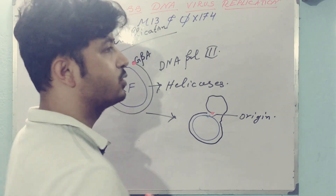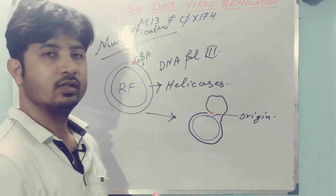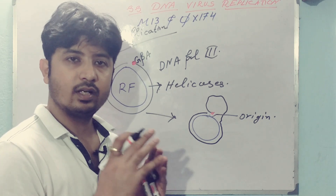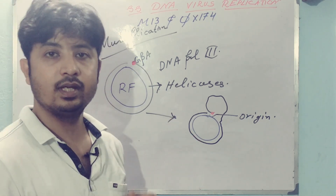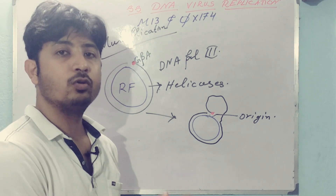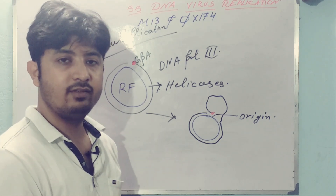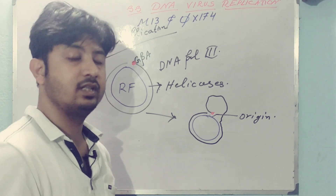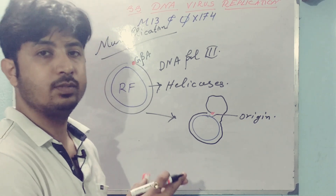Why is the supercoil form necessary? Because gpA needs the supercoil form to bind initially. The second cleavage does not require the supercoil form, but the first cleavage requires it for binding of the gpA protein.